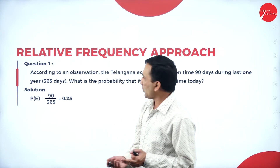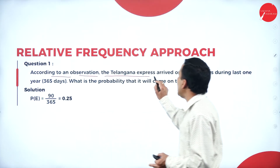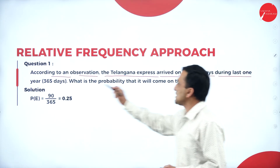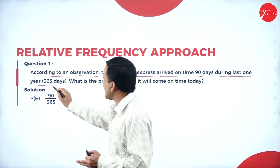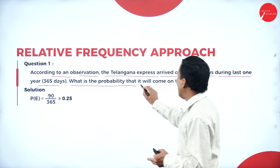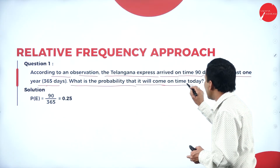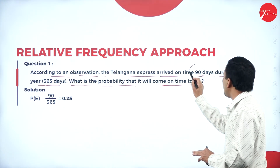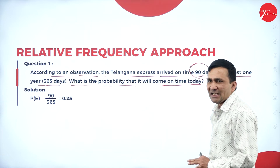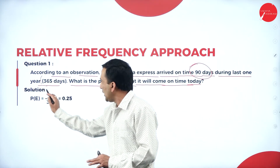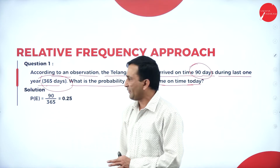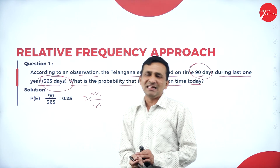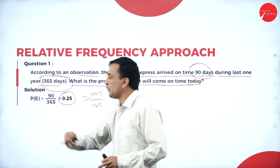Second question on relative frequency: according to observation, the Telangana Express arrived on time 90 days during the last year of 365 days. What is the probability it will come on time today? P = 90/365 = 0.25.